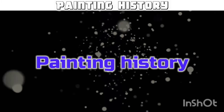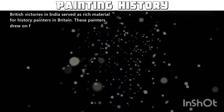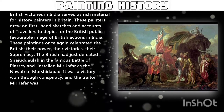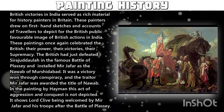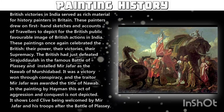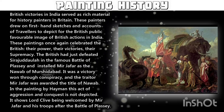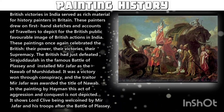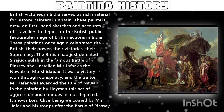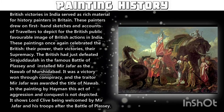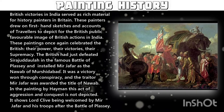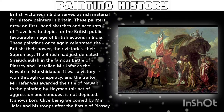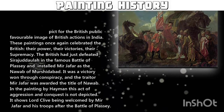The third category of imperial art was called history painting. The first category was picturesque — landscape; the second was portraits in vertical style; and the third was history painting. These history paintings celebrated the power of the British, their victories and their supremacy. In the given painting, you may see the Mir — the Nawab of Murshidabad — who was the puppet ruler installed by the British after they defeated Siraj-ud-Dawla in the Battle of Plassey. It was a victory won by conspiracy, and the Mir was awarded the title of Nawab.